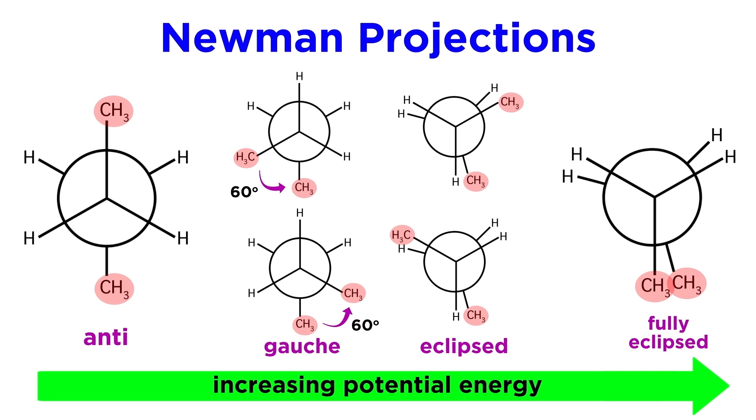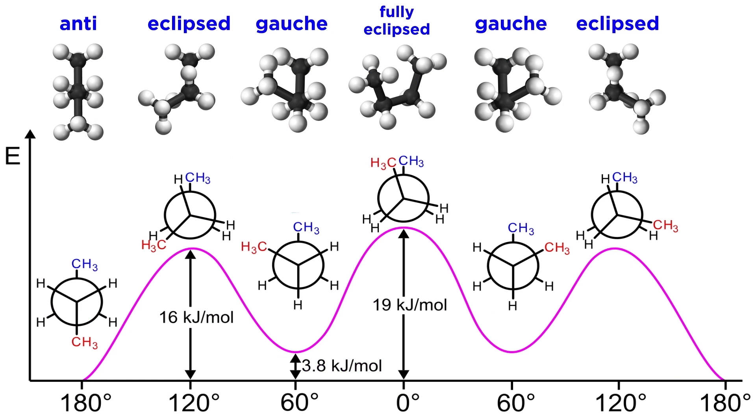and then we also have what are called gauche conformations, which are staggered but involve alkyl substituents at a 60 degree dihedral angle. We can see the relative energies of these conformations on this energy diagram, and we can see that these methyl groups make for a large discrepancy between them.